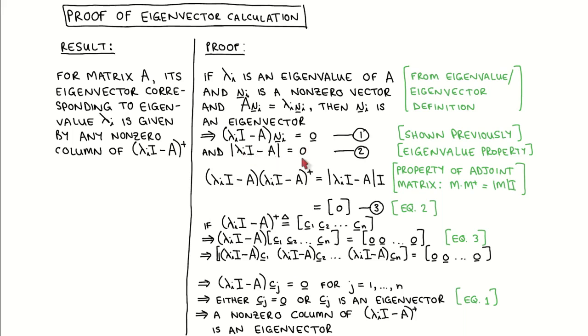From this, we can also write down the eigenvalue property that the determinant of matrix lambda I times I minus A is equal to zero. We also make use of a property of the adjoint matrix, which says that a matrix times its adjoint is equal to its determinant times the identity matrix. We apply this property to matrix lambda I times I minus A in this line.